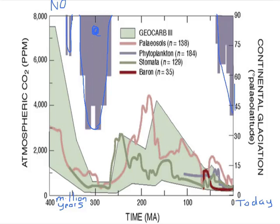So there's the history, and you could think of this as a history of temperature. There was no ice because it was warm. There was ice because it was cold. There was no ice because it was warm. There was ice because it was cold.